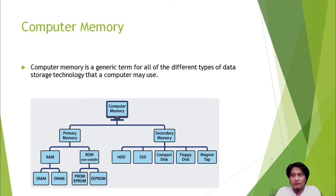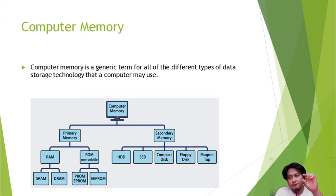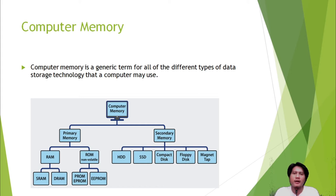Computer memory is a generic term for all the different types of data storage technology that a computer may use. On the screen, you can see a diagram where the top level is computer memory, and on the second level we have primary memory and secondary memory. Under primary memory, we have RAM and ROM.